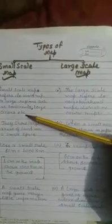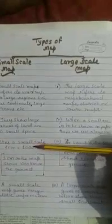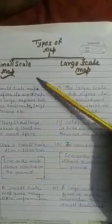Small scale map refers to world map or large regions such as continents, large oceans, etc. They show large areas of land in a small space. They can use a small scale like 1 cm equal to 1000 km, which means 1 cm on the map shows 1000 km on the ground. This small scale map gives very little information.